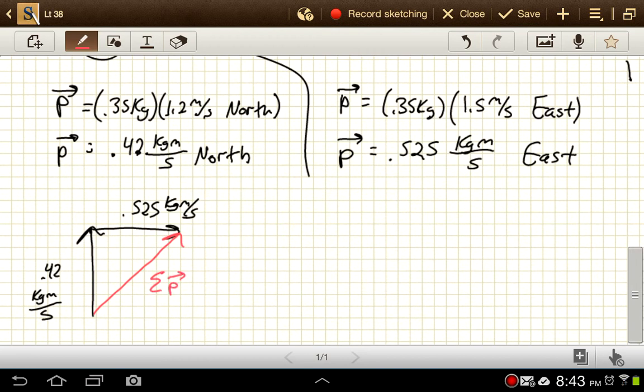And I'm going to find out what this angle is as well. So my net momentum, just the magnitude, so I don't have the vector symbol on there, is going to be equal to 0.525 kilogram meters per second. And that's all squared. This one needs to be squared too plus 0.42 kilogram meters per second. And that gets squared.